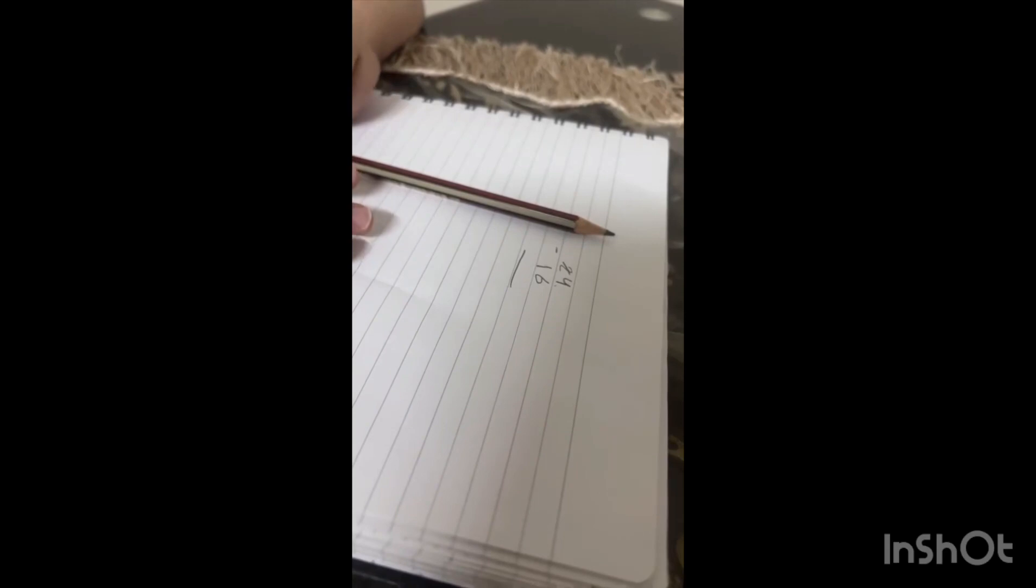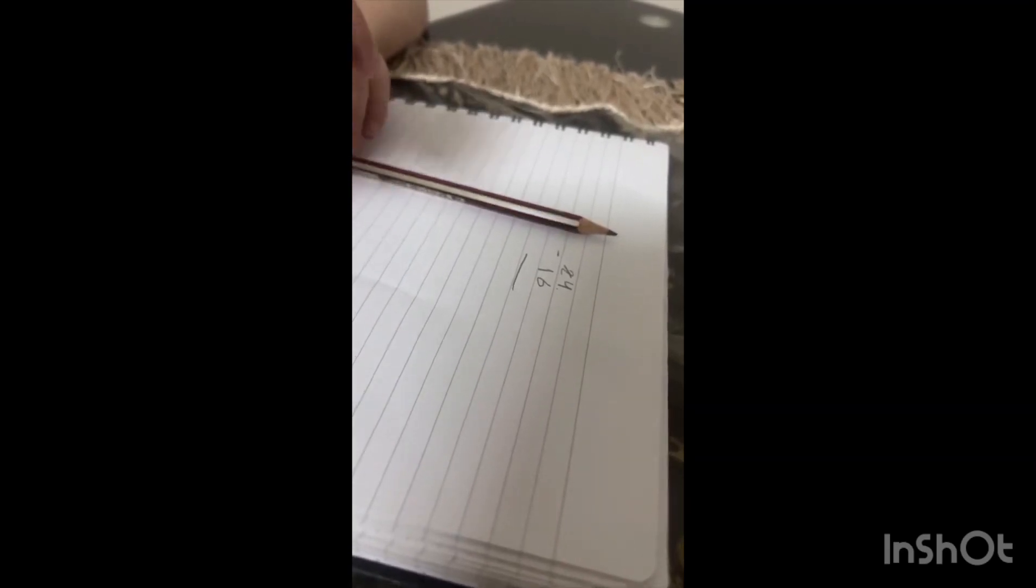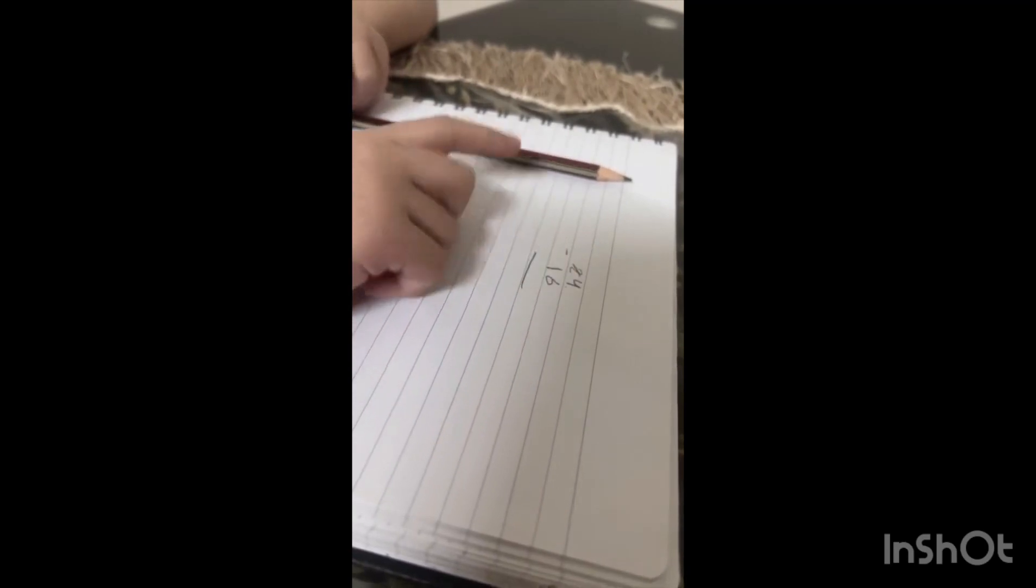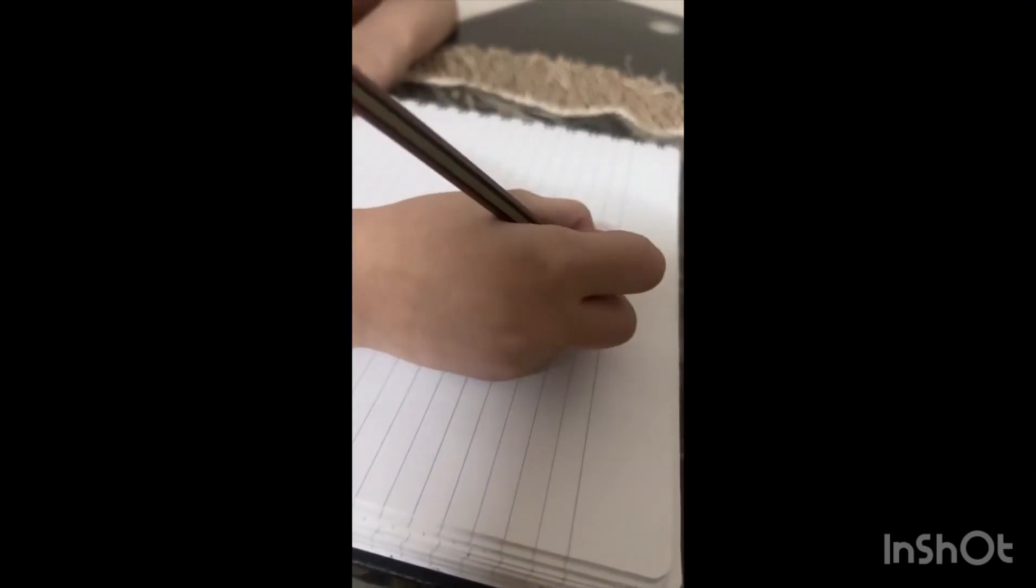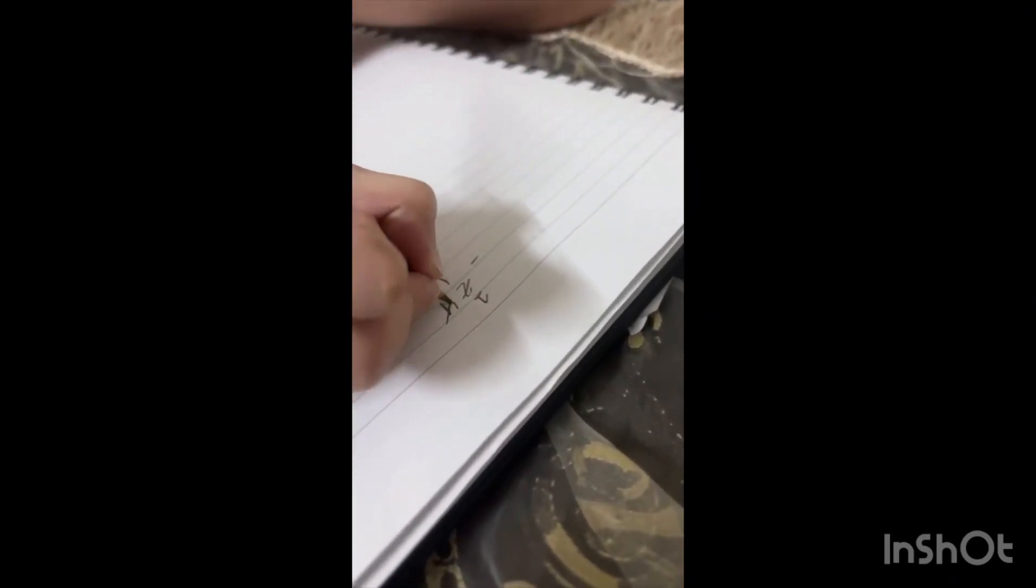Here we have 24 minus 16. Here we have four minus six. I can't make minus from four to six, so I go to that end and I take one. The two will be one, and the four will be fourteen.